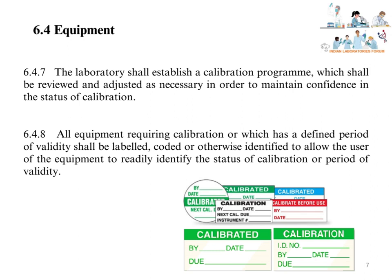All equipment requiring calibration, or which has a defined period of validity, shall be labeled, coded, or otherwise identified to allow the user to readily identify the status of calibration or period of validity. Each equipment used in the laboratory should have a calibration status label to avoid misuse of equipment.